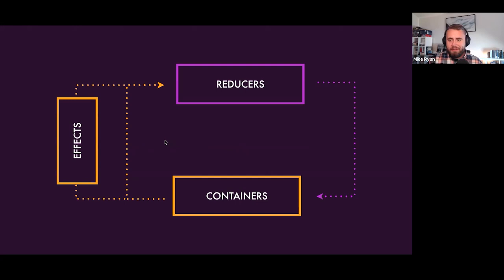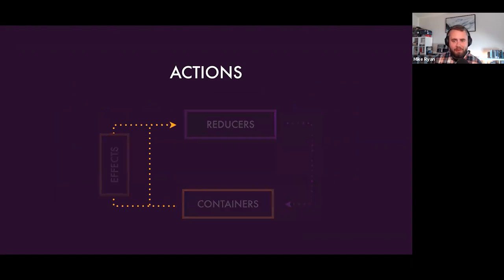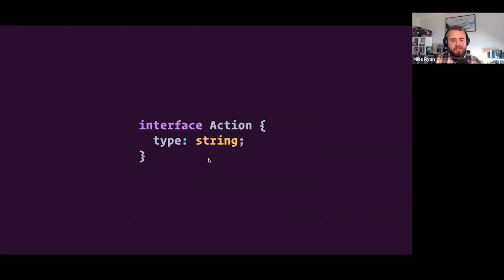An NGRX app splits into three primary modules of code: container components, effects, and reducers. To achieve indirection, these modules communicate without knowing about each other. The primary way this communication happens is through something called actions. Actions are the bedrock of an NGRX application — they are truly the glue of the NGRX loaf. They are a description of events that occur in your Angular applications.